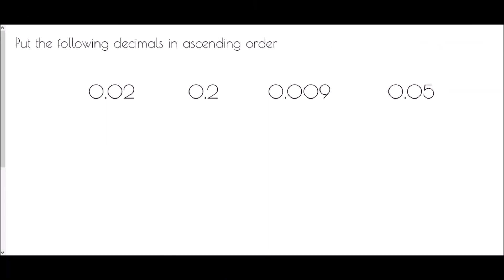Next, we're going to look at putting decimals in ascending order — starting with our smallest decimal and going up to our largest. When comparing decimals, we need to make sure we can compare them directly, which means having the same number of decimal places. Our largest number has three decimal places, so we add zeros to fill in the placeholders for all the others.